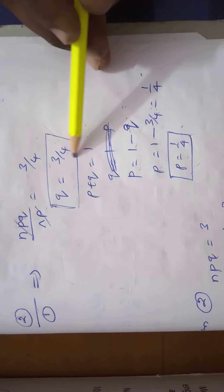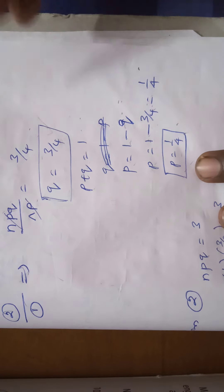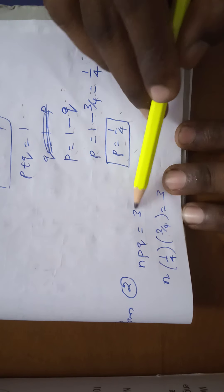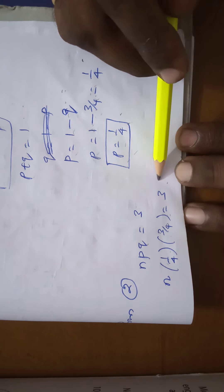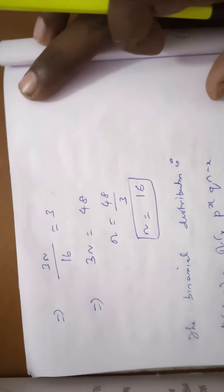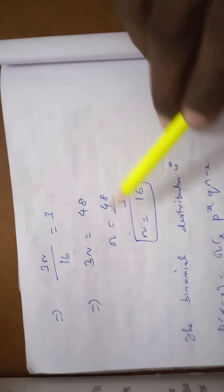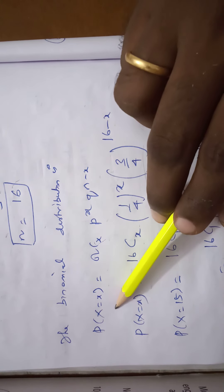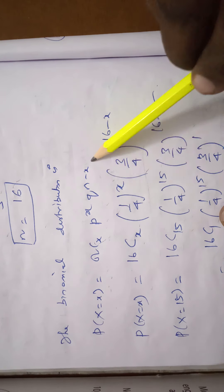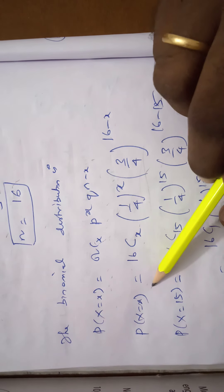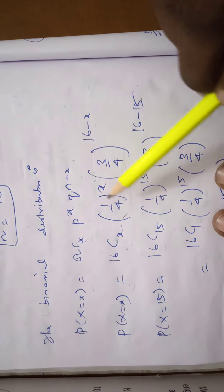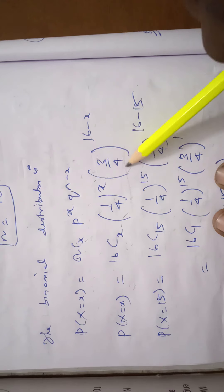Next we calculate N. From equation number 2: Npq = 3. Substituting p = 1/4 and q = 3/4: N × (1/4) × (3/4) = 3, so 3N/16 = 3, giving N = 16. The binomial distribution is P(X = x) = 16Cx · (1/4)^x · (3/4)^(16−x).